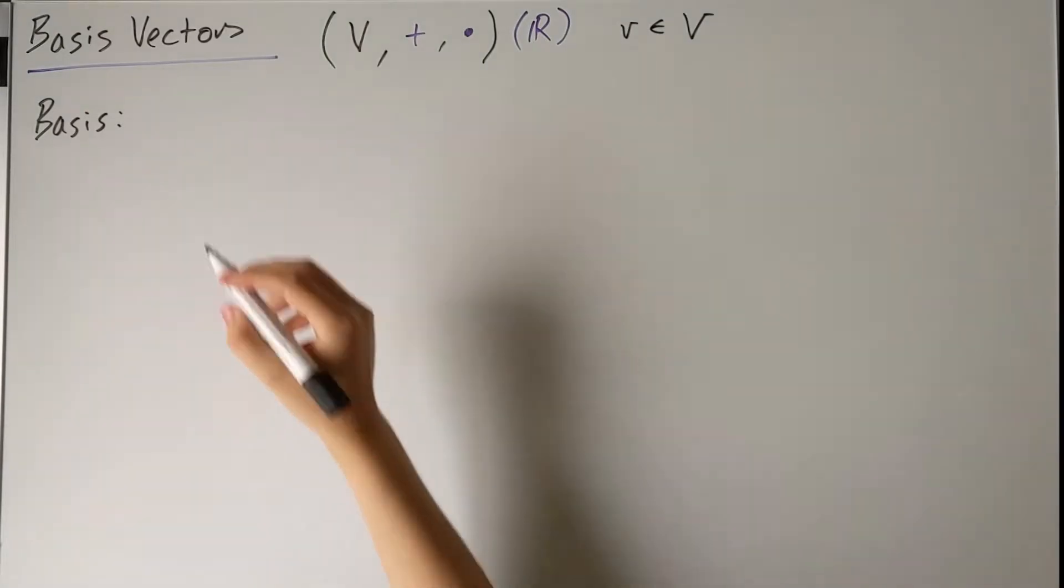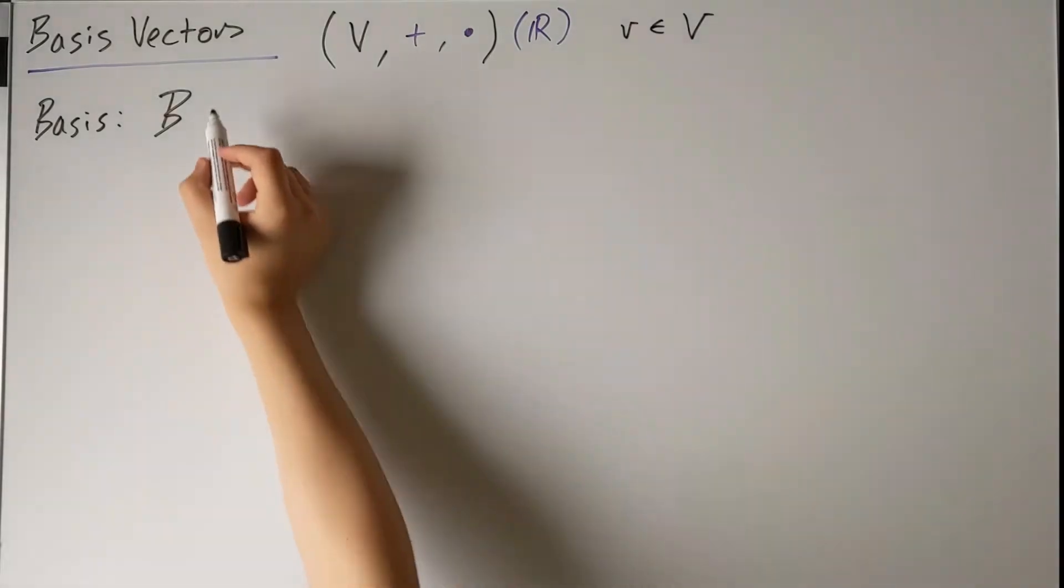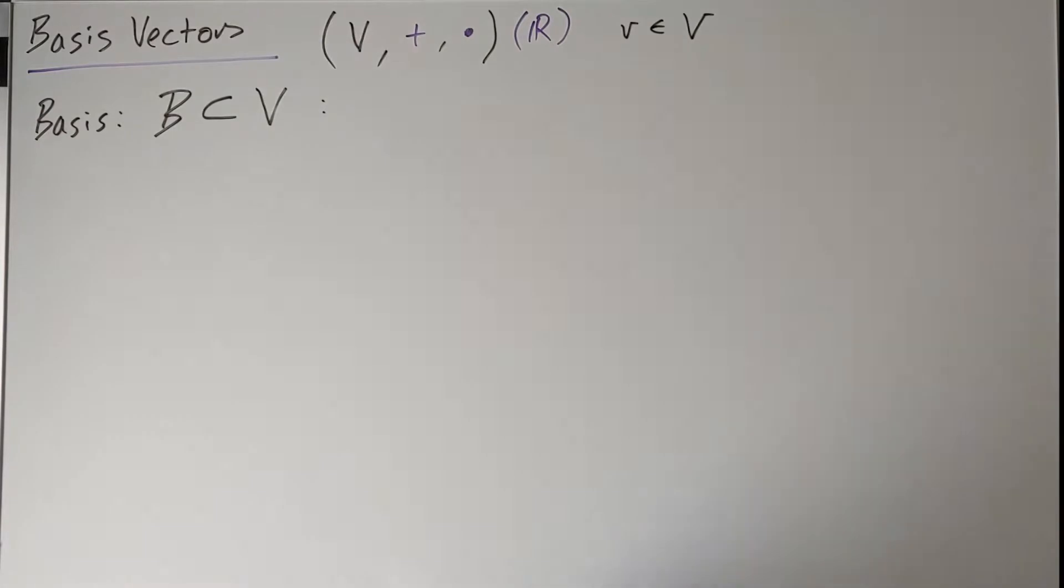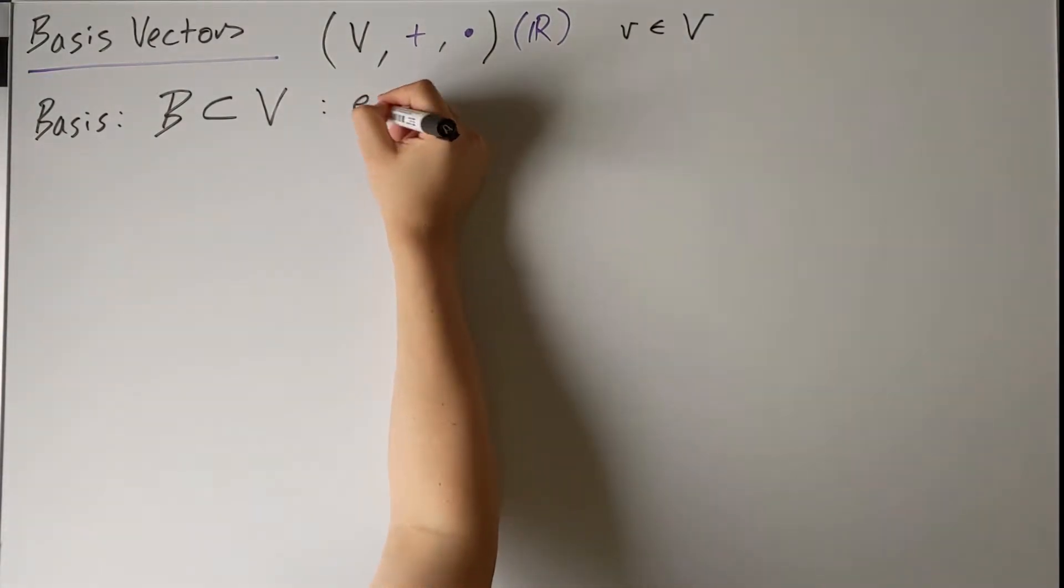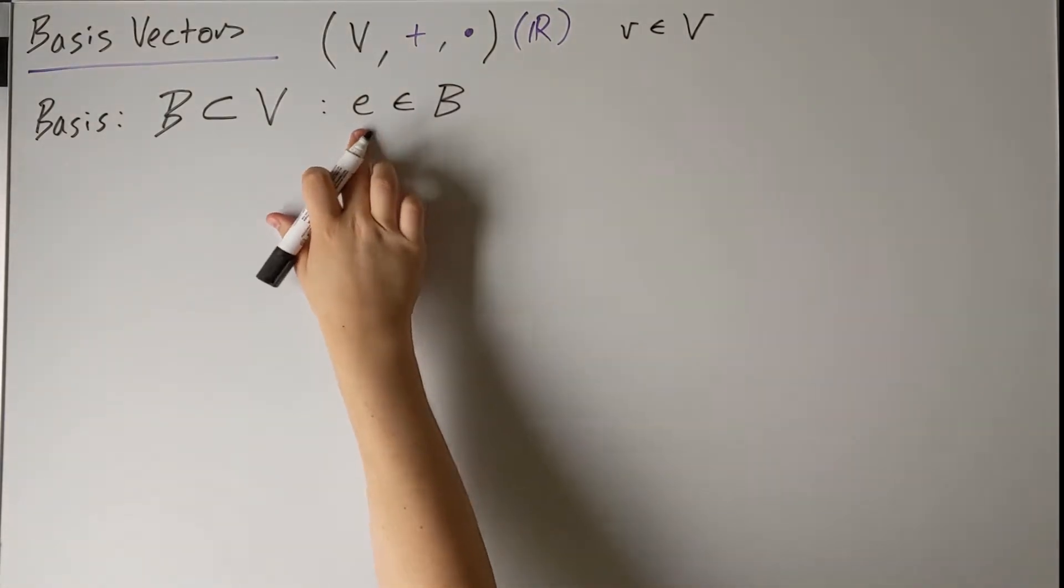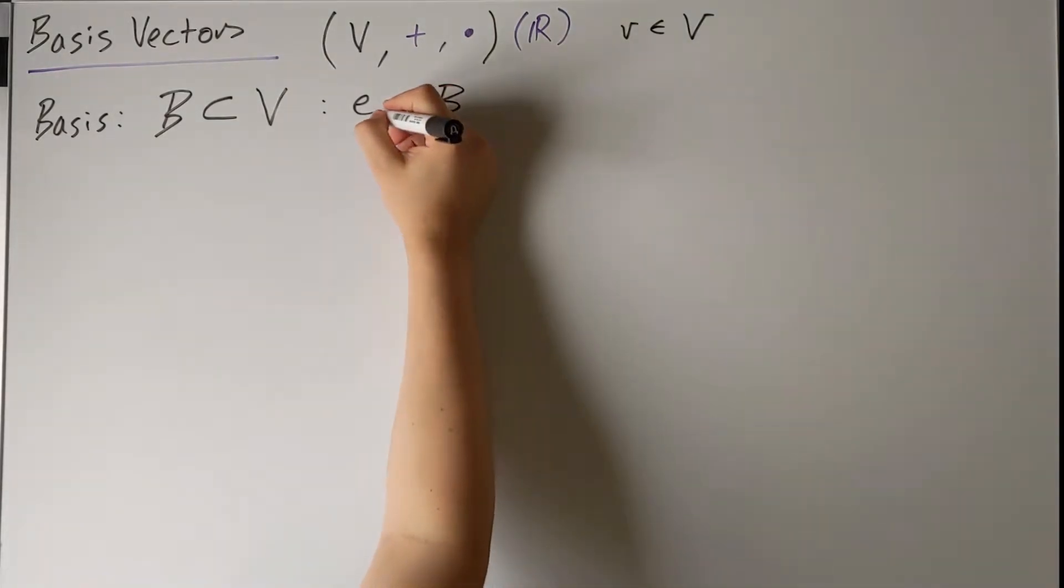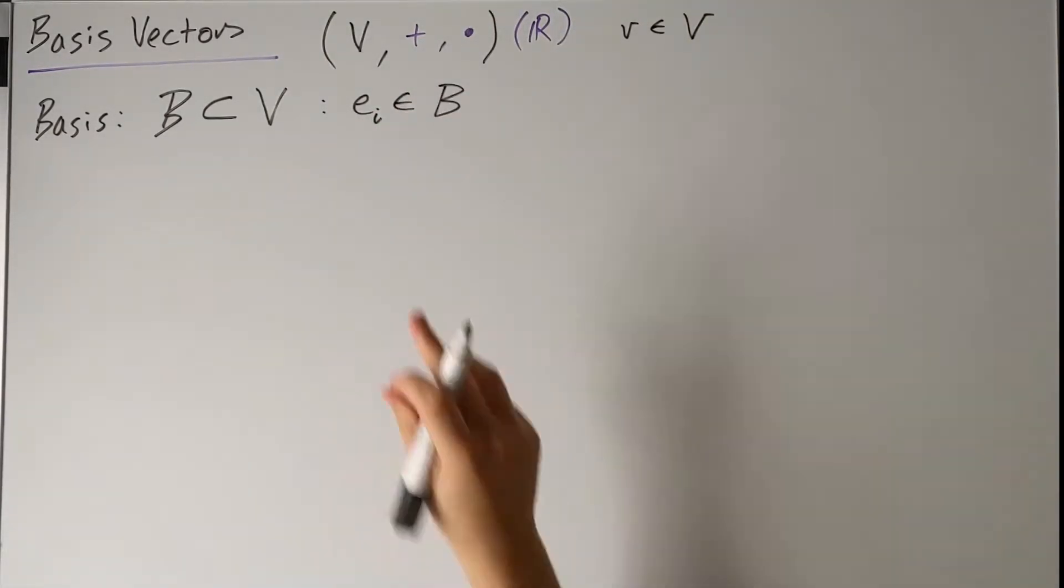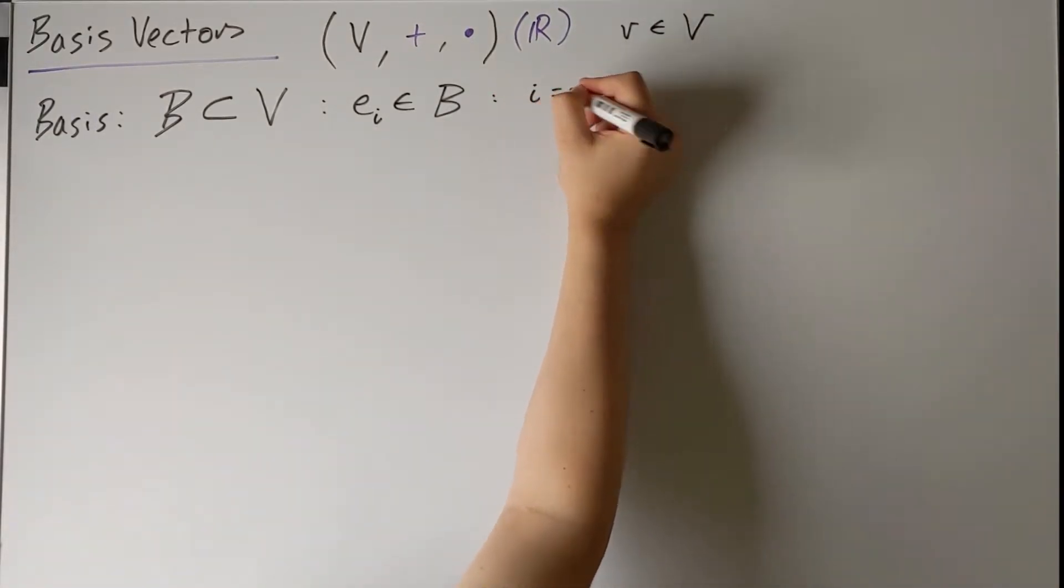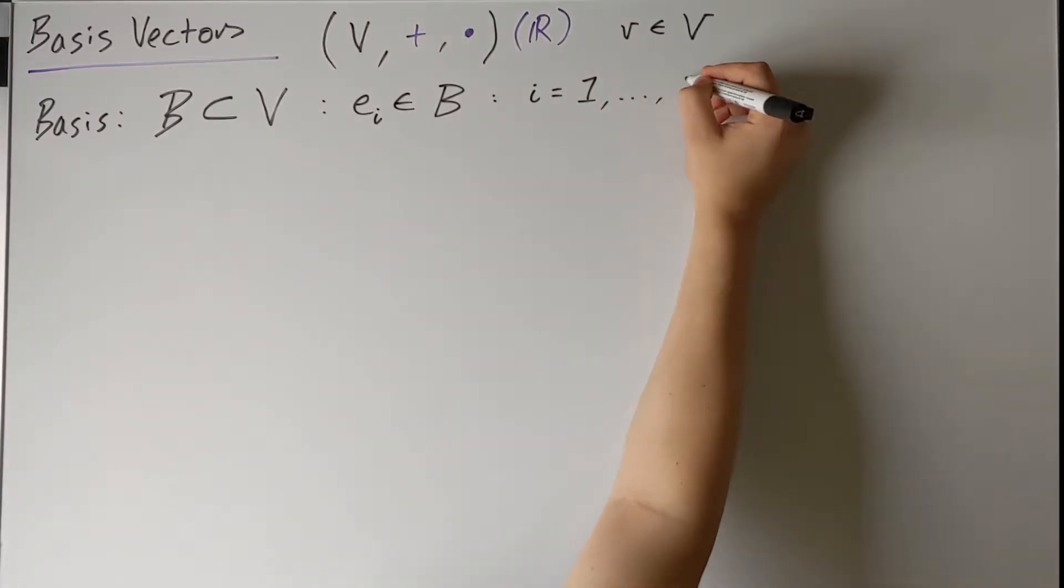So a basis is another set, which I'm going to call B, which is a subset of our vector space. So the elements of this set B I'm going to call E. E is a member of the basis. And because we're going to have, or could potentially have, multiple numbers of these E's, I'm going to keep track of them using the index i. So this subscript index i is just some number that could run from one to any number up to, say, D.